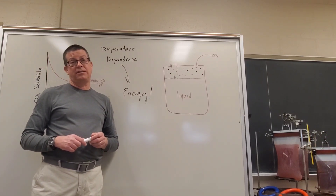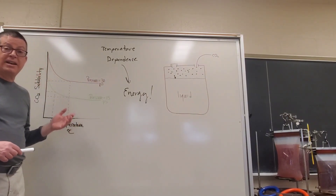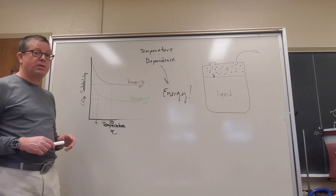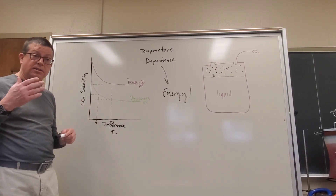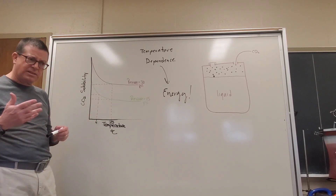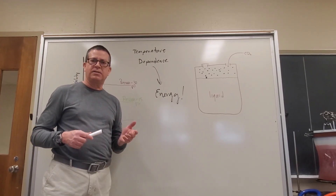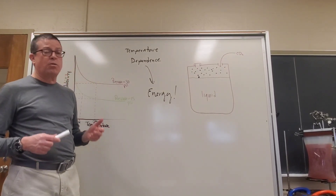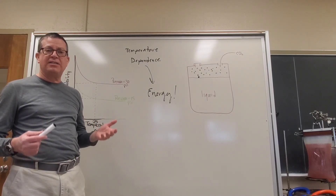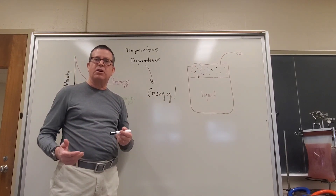Next, let's discuss the finer points of the temperature dependence. At any given pressure, if we decrease the temperature, we get an increase in CO2 solubility - the solubility of the gas increases as the temperature of the solution decreases. When we change the temperature of a system, we're changing the amount of heat or energy in that system. Removing heat causes the temperature of that system to go down.